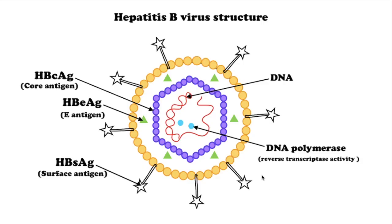The virus consists of an outer lipid envelope and a nucleocapsid core composed of core protein. The genome of HBV is made of circular DNA, but it is unusual because the DNA is not fully double-stranded. The nucleocapsid encloses the viral DNA and a DNA polymerase that has reverse transcriptase activity.